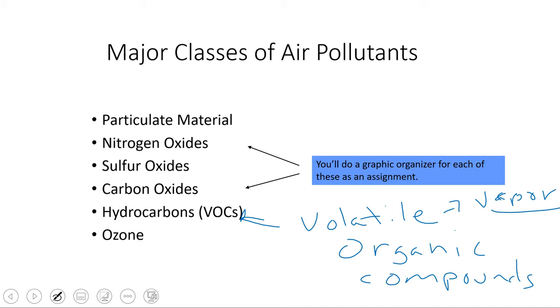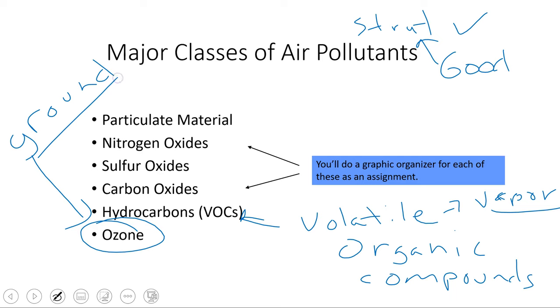And then ozone. Some of you guys might be wondering, 'Wait, I thought ozone was really important.' We are talking about ground-level ozone. Ozone is important up in the stratosphere—that's our good ozone. Ground-level ozone is bad; it's not good for us, not good for plants. So we like ozone to be up in the stratosphere, we dislike it down here in the troposphere where we can breathe it in. But anyways, those are our major classes. You guys are going to do a graphic organizer to get more information about those.